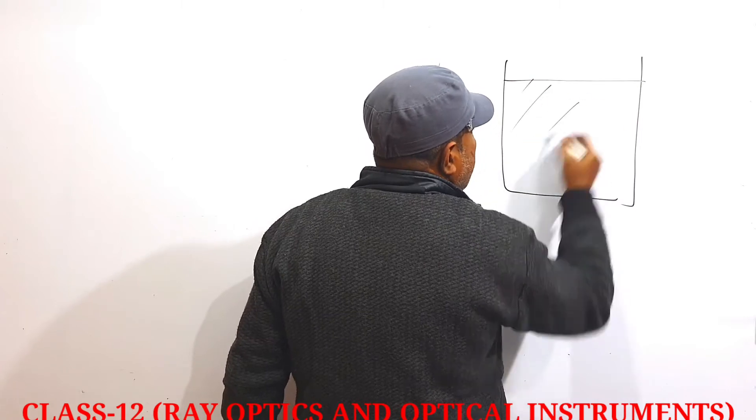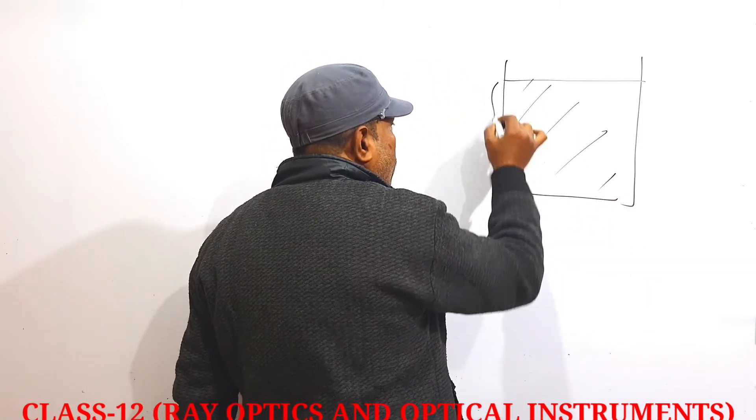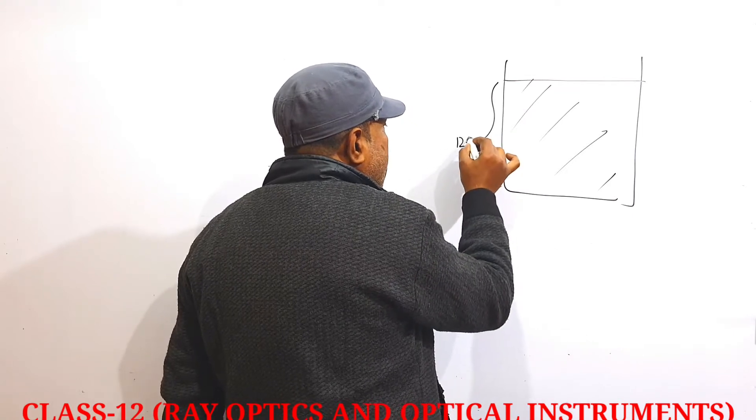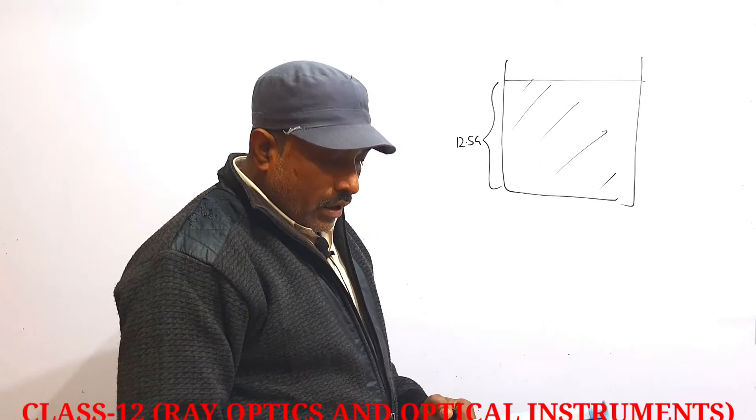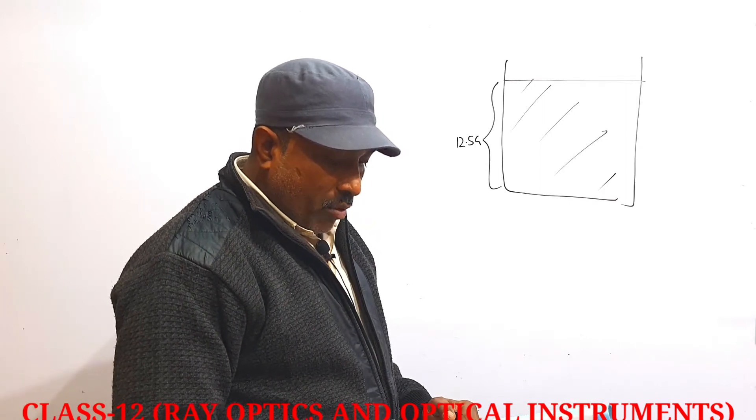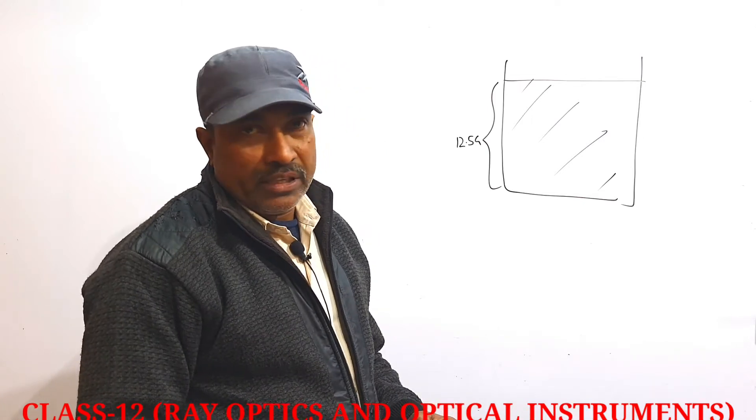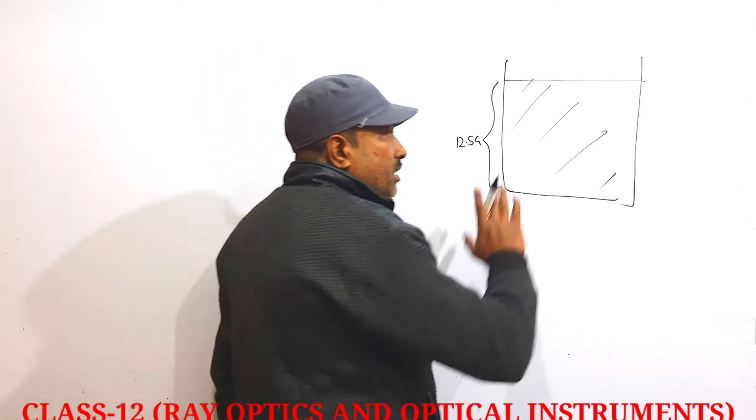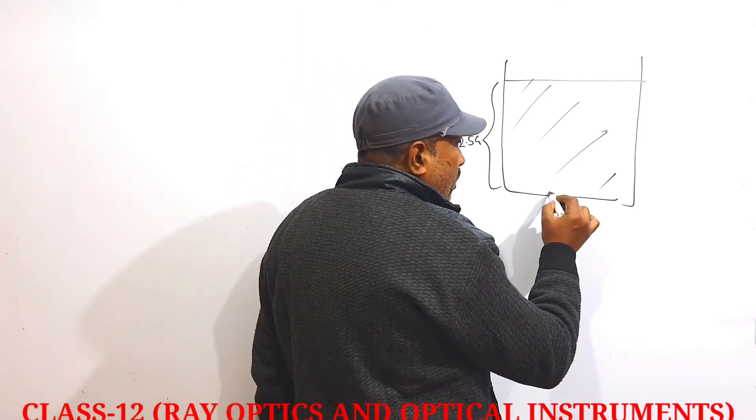The tank contains water at this height. The apparent depth of a needle lying at the bottom of the tank is measured by a microscope and is 9.5 centimeters. If there is an object, suppose a needle, at the bottom of the tank.